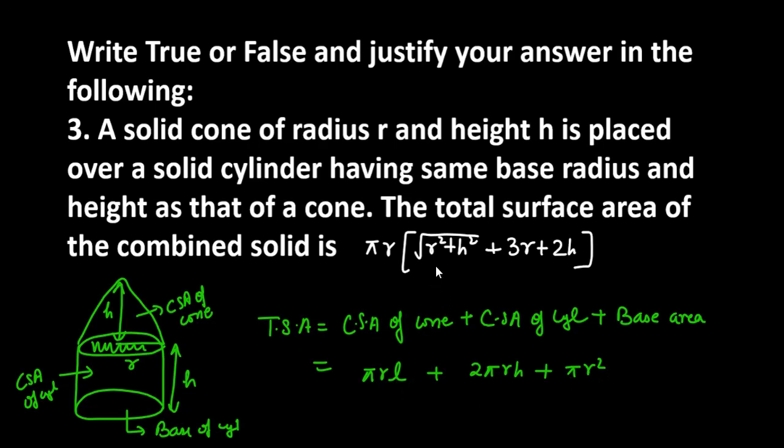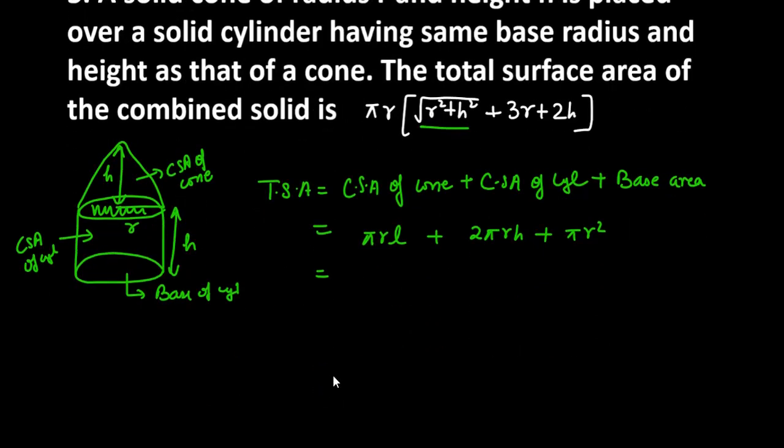Now, L की जगह इन्होने क्या put किया हुआ? इन्होने put किया हुआ under root r square plus h square. I will put the same. Then, I will try to take common. It is pi r under root r square plus h square, 2 pi r h plus pi r square.